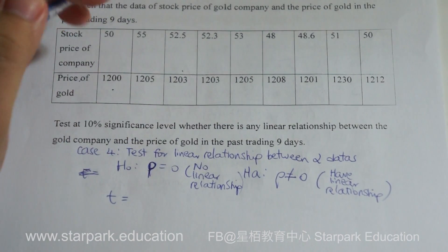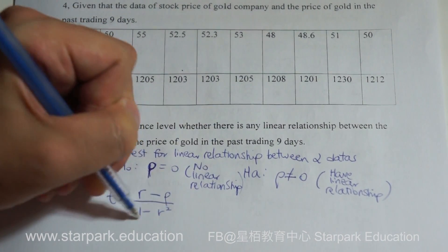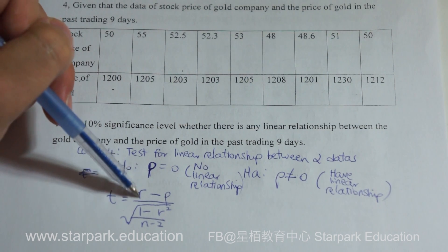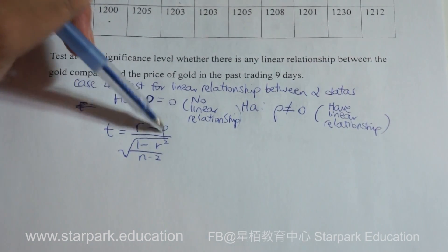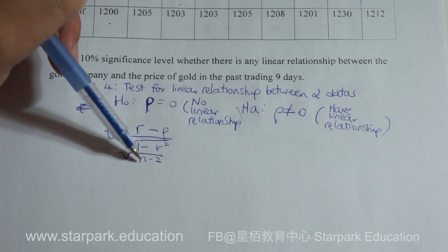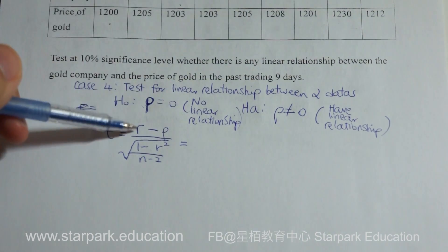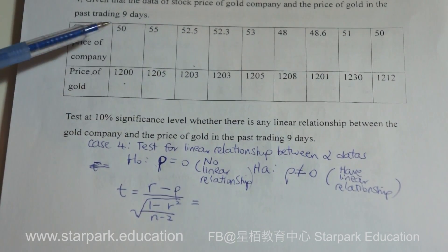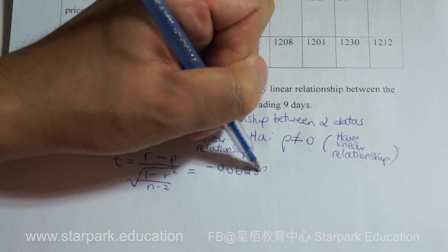The t-test formula uses R, the sample correlation coefficient, minus rho (the value tested in the null hypothesis), divided by the square root of (1 minus R squared) divided by (n minus 2). Here, R is the sample correlation coefficient. Using your calculator with the two datasets, the correlation coefficient is minus 0.062898. Be sure to use as many decimal places as possible.